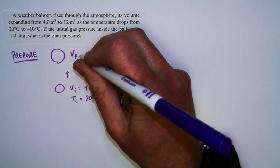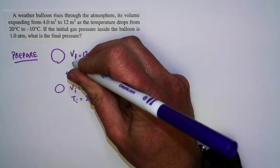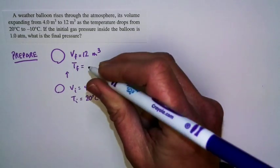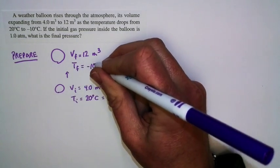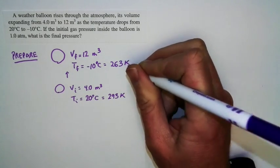It rises to a final volume of 12 cubic meters. And as it rises, the temperature changes as well. The final temperature is negative 10 degrees Celsius, but again we're going to need that in Kelvin, so that's 263 Kelvin.